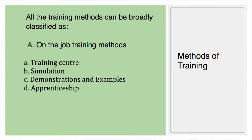Another method is demonstration and examples, where the trainer shows how to do certain work through demonstrations and step-by-step activities described by the supervisor. Demonstrations are often used in combination with lectures, pictures, texts, and discussions. Then there is apprenticeship, where an apprentice is given a program of assignments according to a predetermined schedule providing efficient training in trade skills. The period of apprenticeship is determined by the nature of the job and its performance requirements.